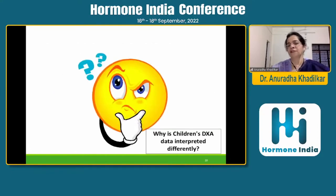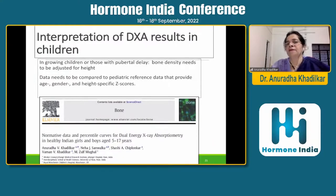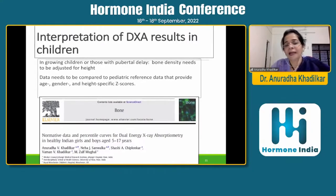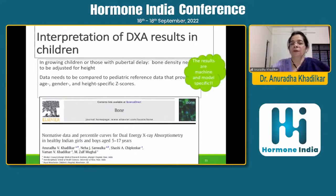Why is children's DEXA data difficult to interpret? Because children grow and go into puberty at different times, meaning bone density increases at different times. A 13-year-old boy in very early puberty will have much lower bone density than another 13-year-old boy who has almost completed puberty — but that does not mean the first one has osteoporosis. He just has to put away more bone. Data need to be compared to pediatric reference data providing age, gender, and height-specific Z-scores. Unfortunately, Z-scores also change according to the make and type of the machine.